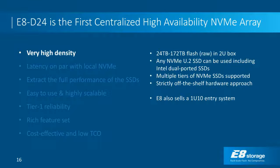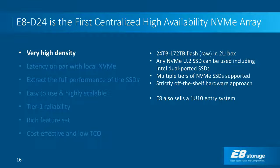We use strictly off-the-shelf hardware — our secret sauce is the E8 software. We use a standard chassis with either 24 SSDs in the D24, or we also sell a 1U10 NVMe entry system. For networking we use Mellanox HBA cards — all commodity hardware running our software. It's essentially software-defined NVMe.